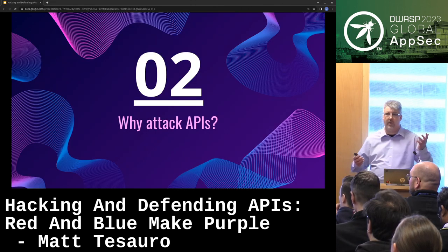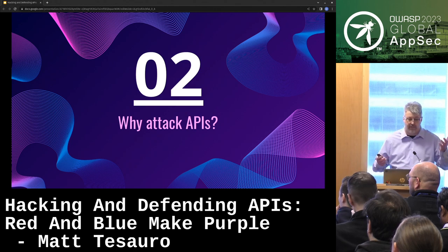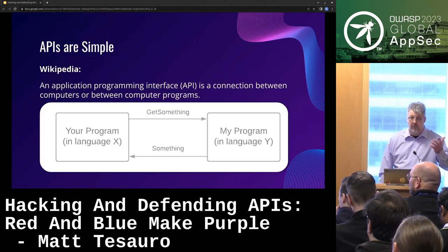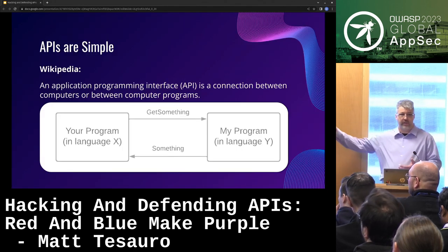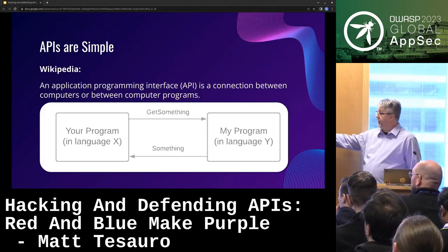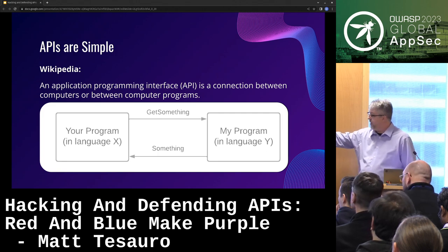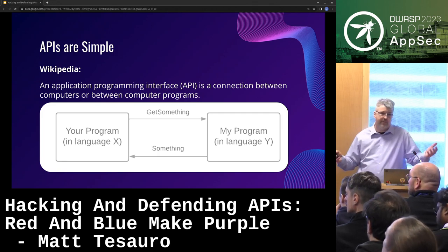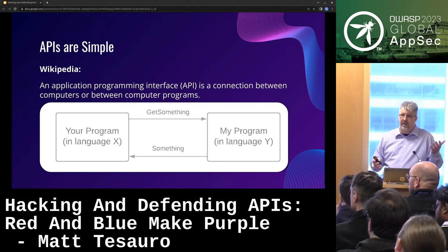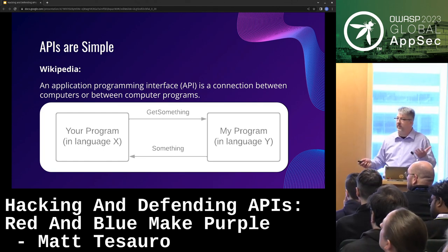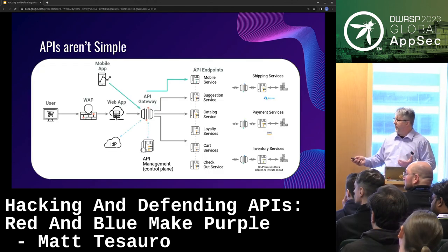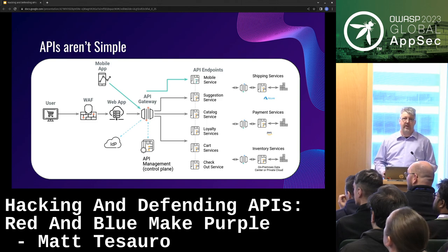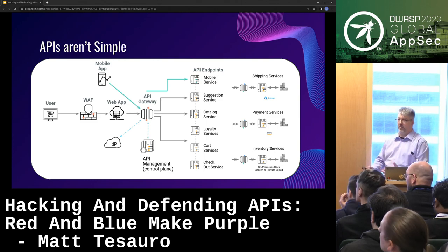Why attack APIs? Why is this even a thing? Well, APIs are simple, right? Go to Wikipedia — your program calls my program over a network and I send some data back. This is simple. APIs are gravy. But if you think about it, APIs aren't gravy — APIs have a lot of moving parts.